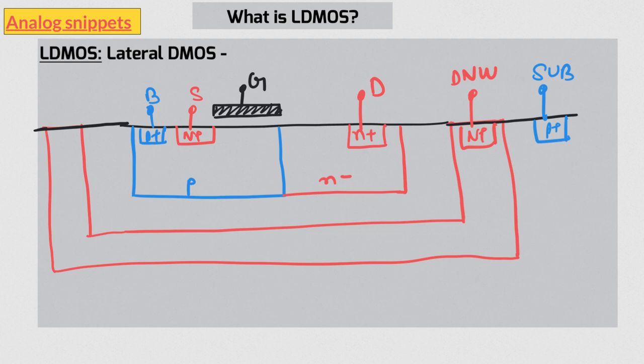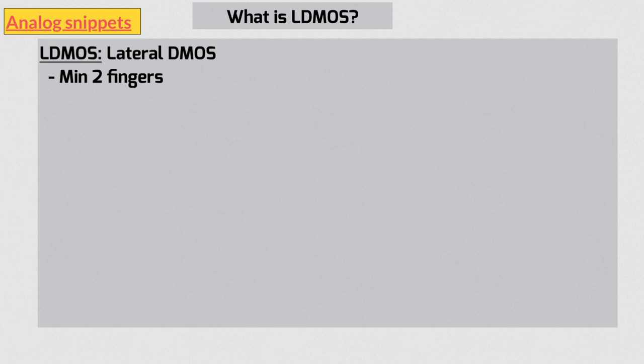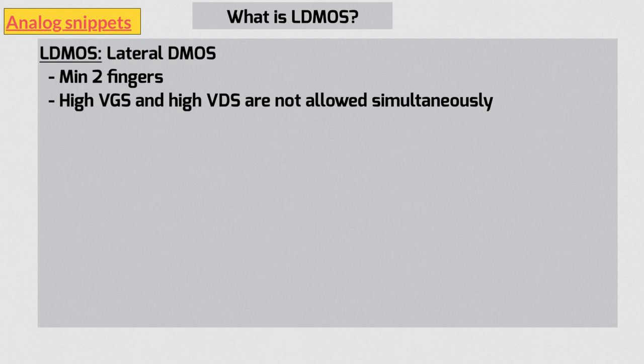To save some area, LDMOS almost always share the drain between the two sources on either side. So they almost always have minimum two fingers. As I mentioned before, a very important consideration is that you can either have high voltage or high current, but not both simultaneously. Another way to say is that high VGS and high VDS are not allowed at the same time.